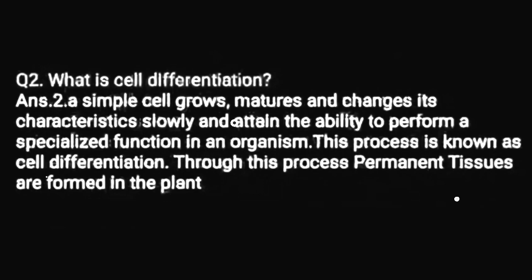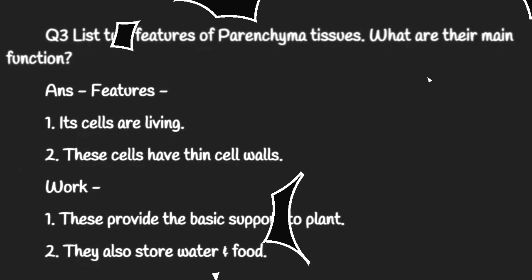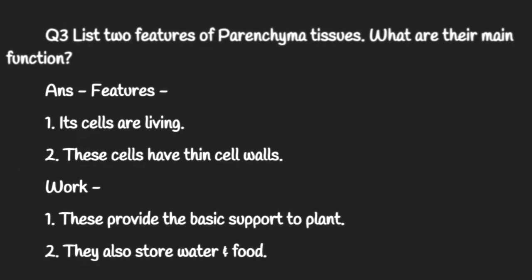List two features of parenchyma tissues. What are their main functions? Features: the cells are living and have thin cell walls. They provide basic support to the plant. They also store water and food.